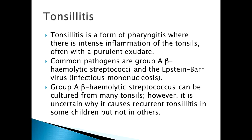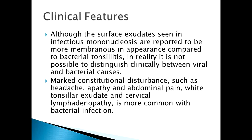In tonsillitis there is an intense inflammation of the tonsils, often with a purulent exudate. There are common pathogens which are bacteria and viruses. An example in bacteria is group A beta-hemolytic streptococci, and an example in viruses is Epstein-Barr virus, which causes infectious mononucleosis. There are many other bacteria and viruses which can cause tonsillitis and pharyngitis.